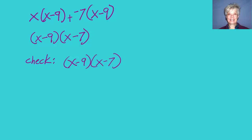But how can I be sure? I am going to multiply x minus 9 times x minus 7, and I'm going to use the FOIL method just because it's easy. First, outside, inside, last.